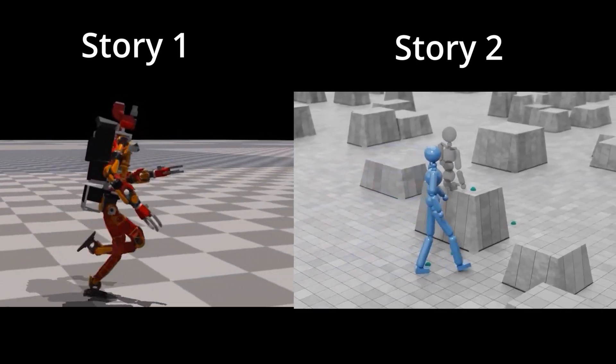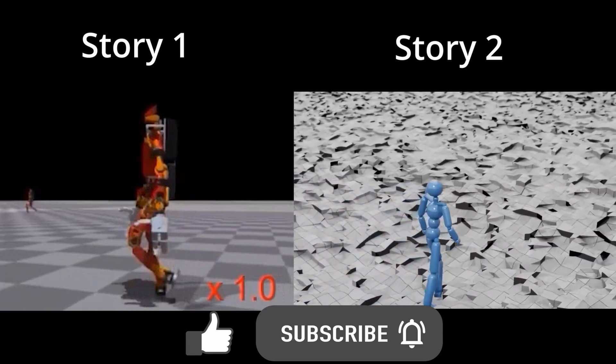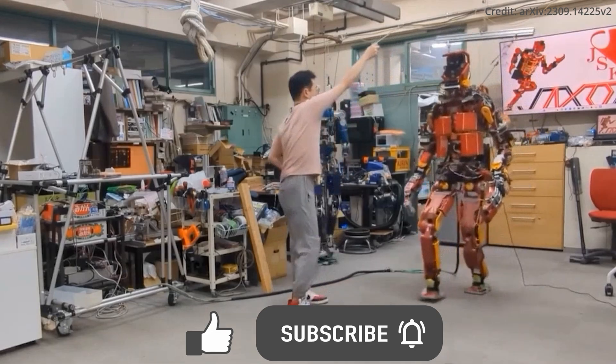Imagine a world where humanoid robots don't just walk but glide through spaces with the same effortless grace, adaptability, and nuanced motion transitions as humans.